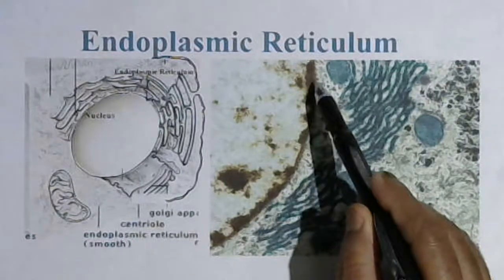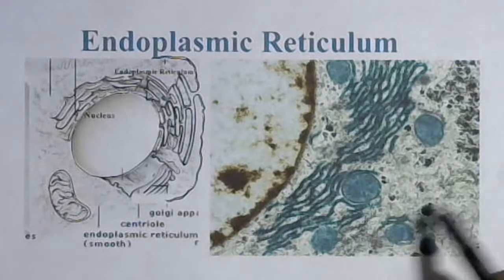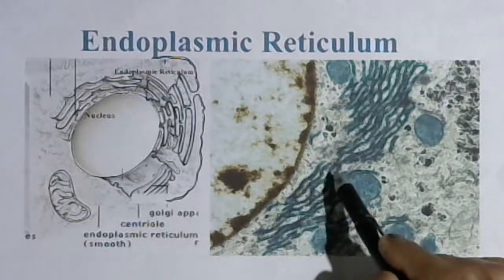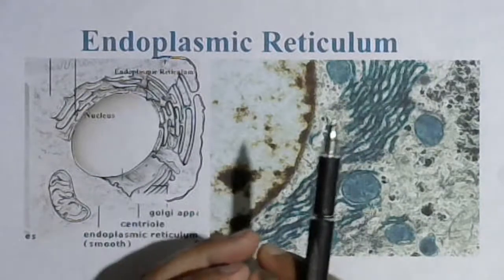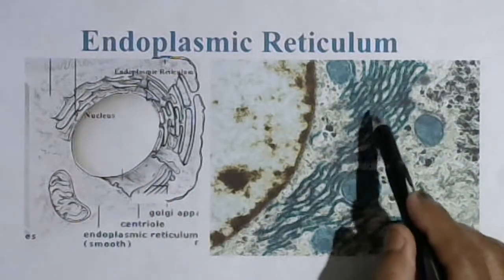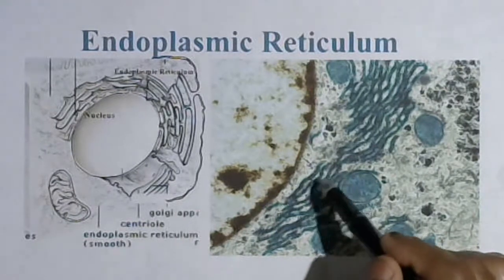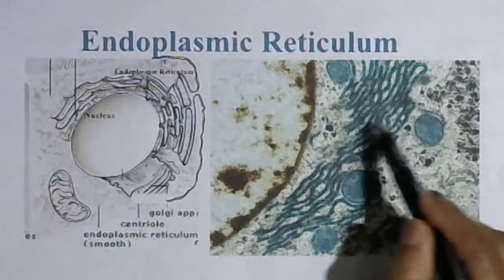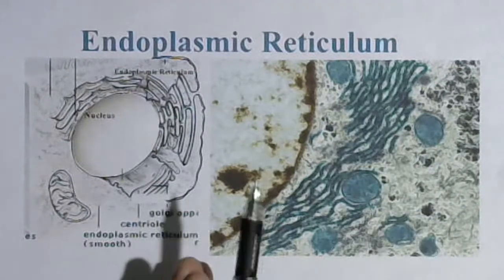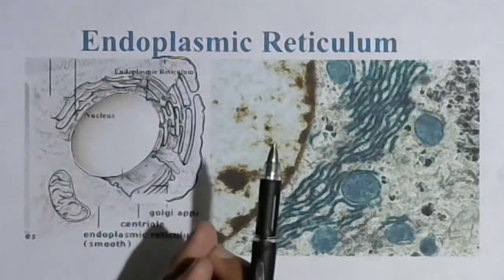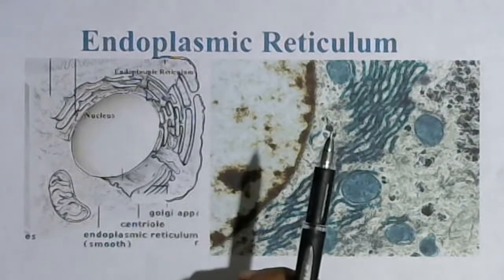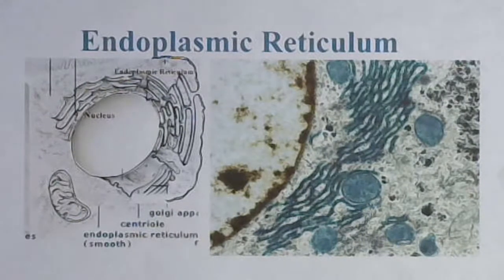The endoplasmic reticulum is connected to the nuclear envelope and extends through the cytoplasm. These highly branched fine tubular networks and flattened structures are actually called the endoplasmic reticulum. Now let us discuss about its occurrence — the endoplasmic reticulum is found in most cells, but in some cells it remains absent.